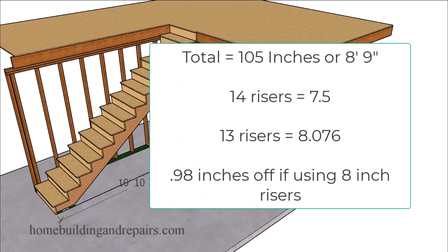To figure out the individual riser height for a stairway with 14 risers, we divide 105 inches by 14, which gives us 7.5 inches — a 7 and one-half inch riser height, acceptable for most building codes in buildings with fewer than 50 occupants. But if the minimum riser measurement is 8 inches and the building designer thinks they can get away with 13 risers, dividing 13 into 105 gives 8.076 inches. Rounding that to the nearest inch gives 8 inches — and this is where the problem starts.